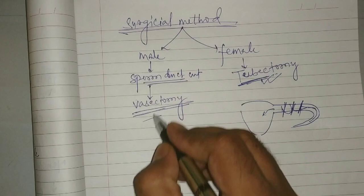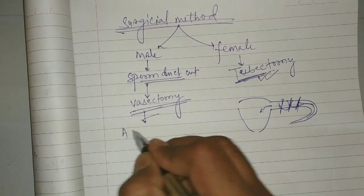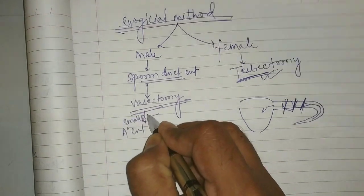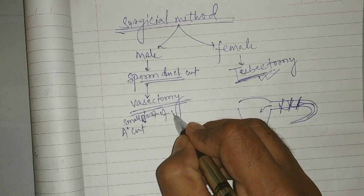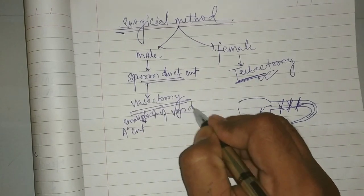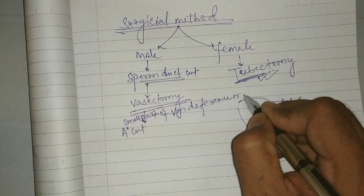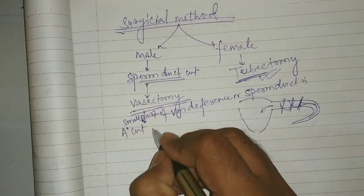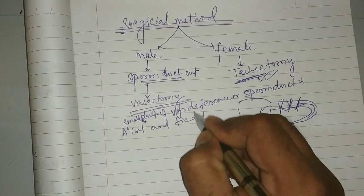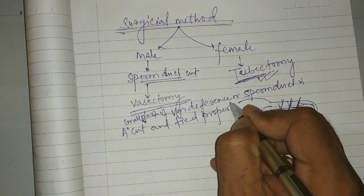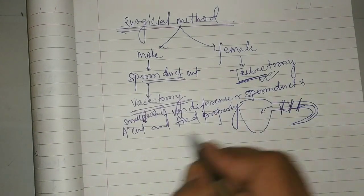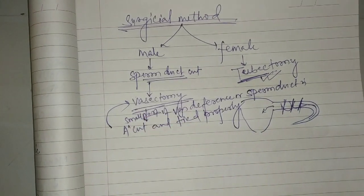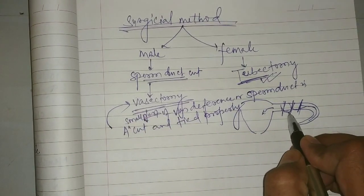So in vasectomy, a small part of vas deferens or sperm duct is cut and tied properly, so that the sperm cannot come out. That method will be called vasectomy.